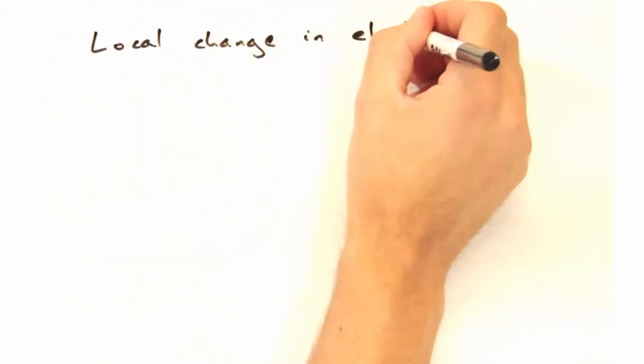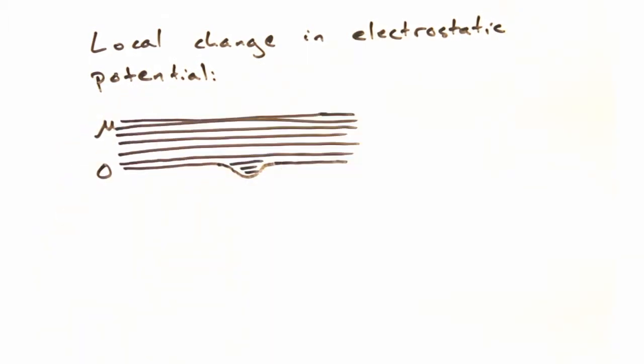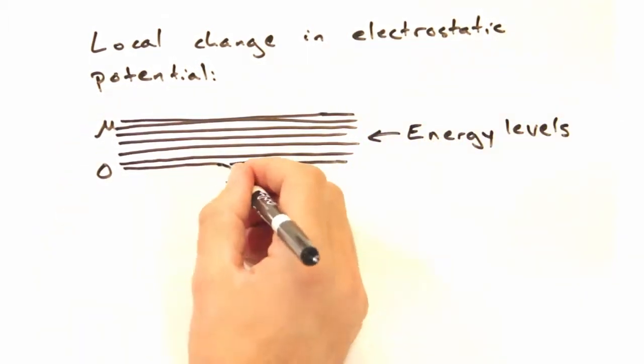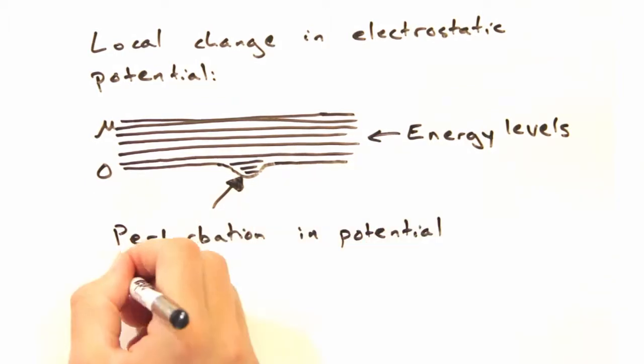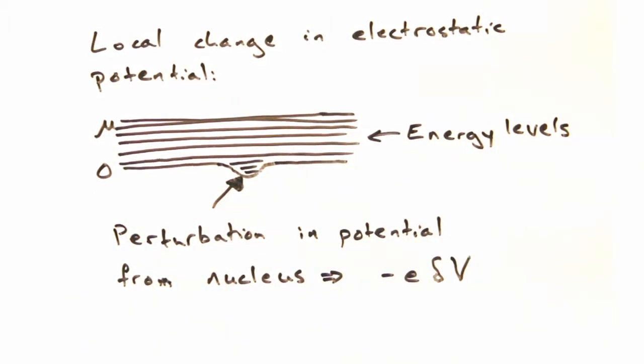So we're going to start by bringing in a nucleus, which will create a local change in the electrostatic potential. The filled energy levels are shown with these lines, and the perturbation is this bump here. The strength of the perturbation is given by minus E delta V.